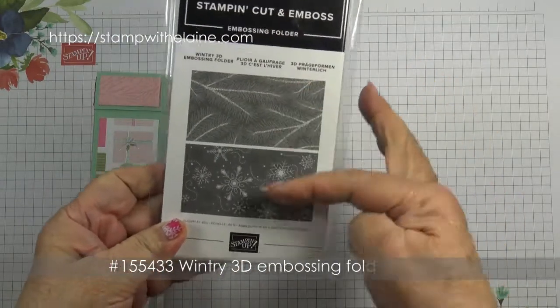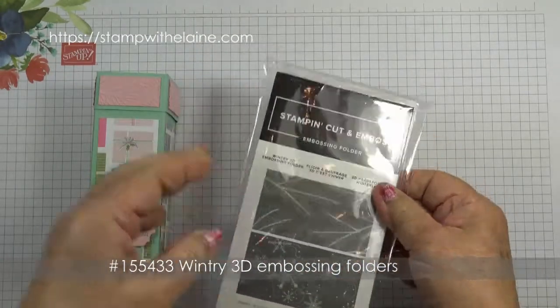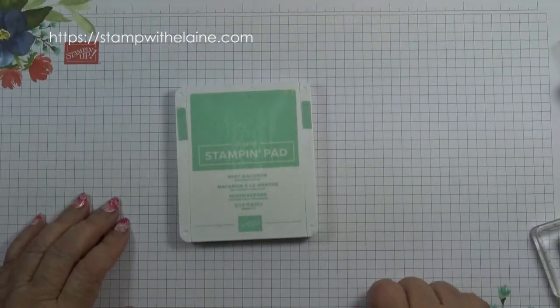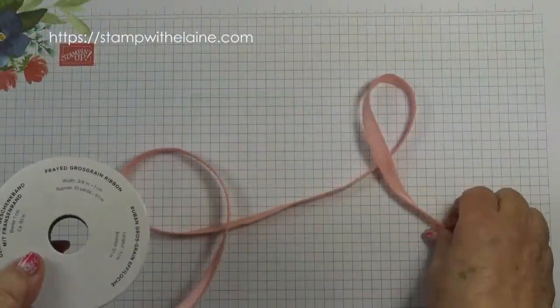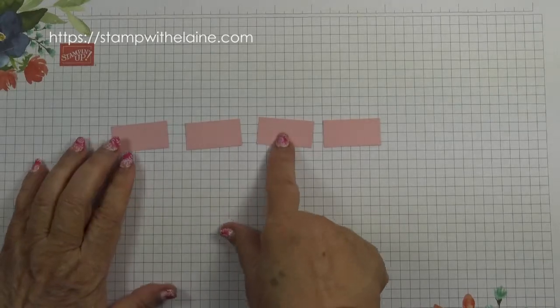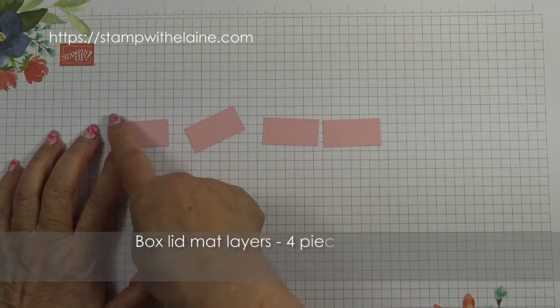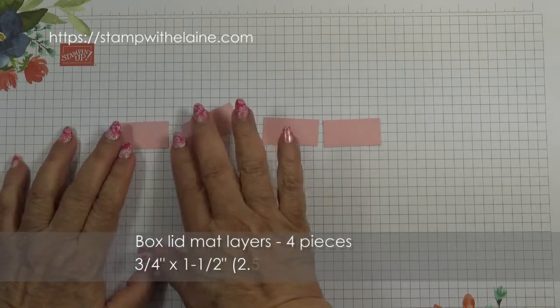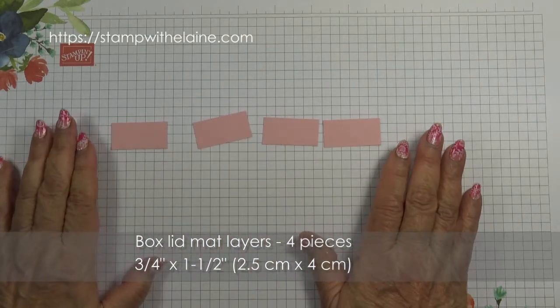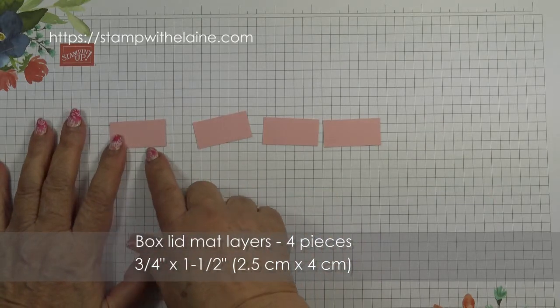This comes as a pair and I used the pine leaf one. Mint Macaron ink. Frayed grosgrain ribbon in blushing bride. Four pieces of blushing bride cardstock cut at three quarter inches by one and a half inches, and you need four pieces. The metric measurement will be 2.5 by 4 centimeters.